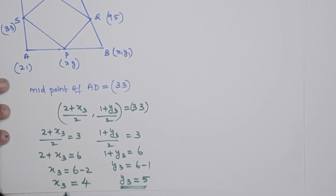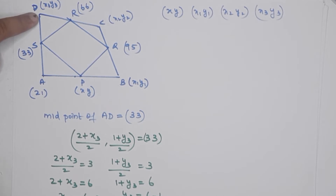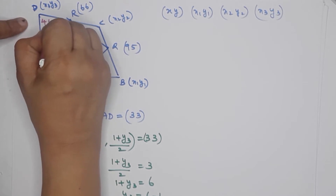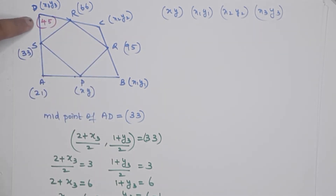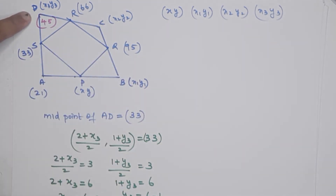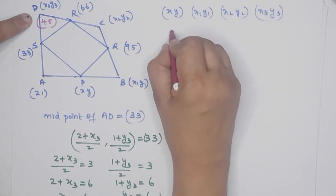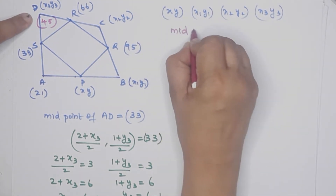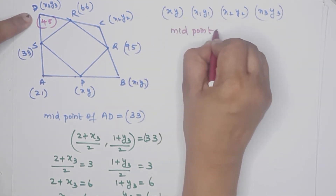So the point (x3, y3) is (4, 5). Note this point: x3 is 4, y3 is 5 — that is point D at (4, 5). Now we have to find the next point E. Moving to the midpoint of CD, which is given as (6, 6).